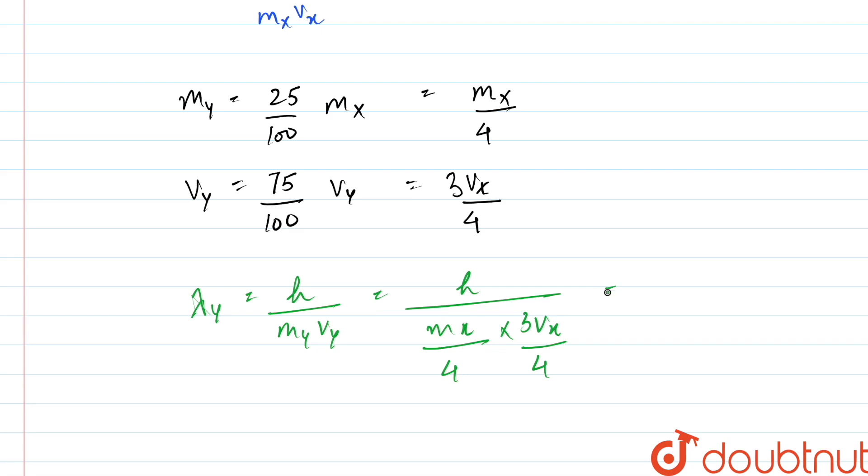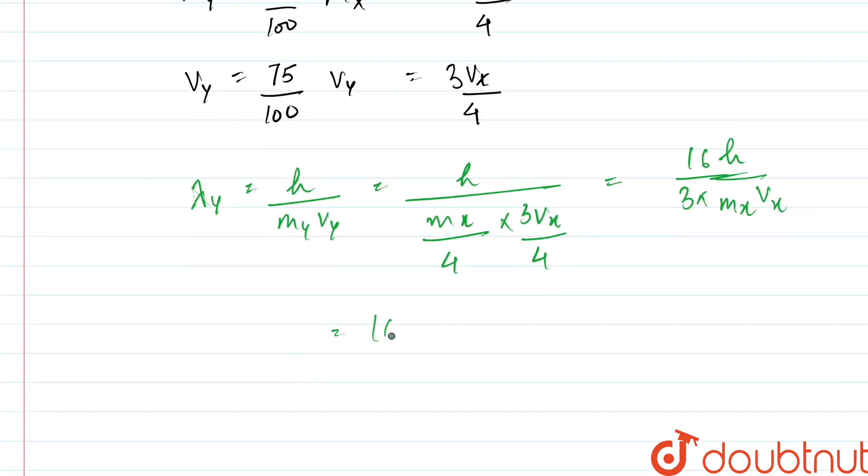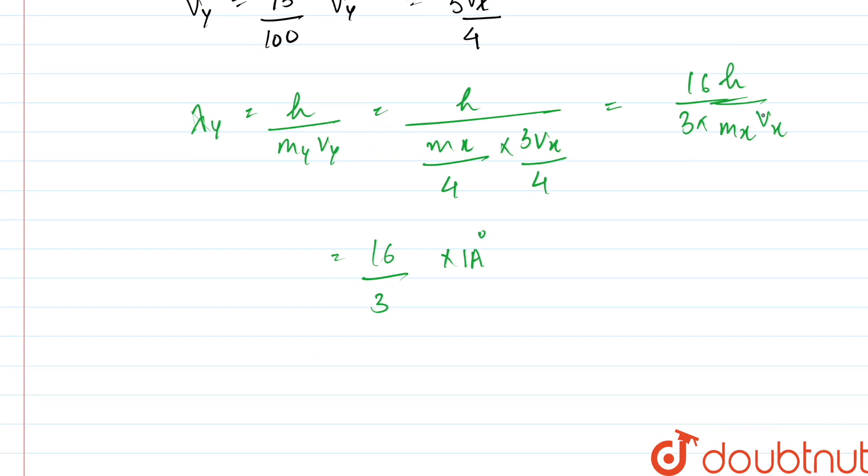So here we get 16h/(3m_X v_X). What we get is (16/3) × 1 angstrom, where 1 angstrom was the value of the de Broglie wavelength of X.